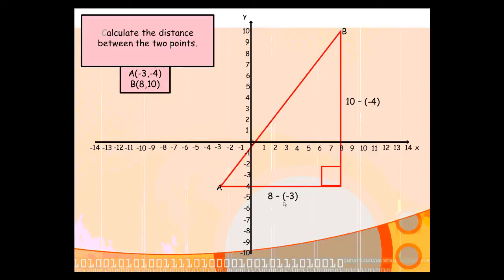For our base, it's the difference between 8 and negative 3. Again, two negatives side by side make a positive, so 10 take away negative 4 is 14, and 8 take away negative 3 is 11.